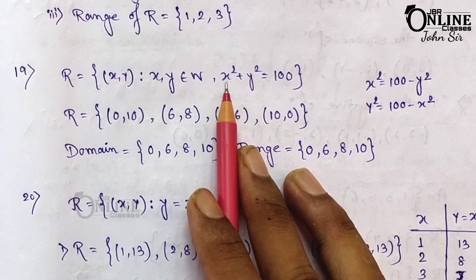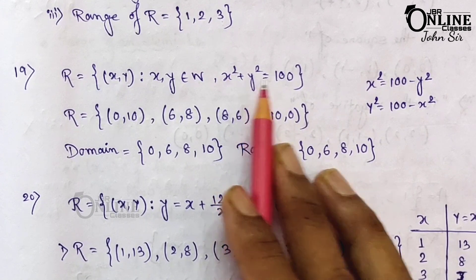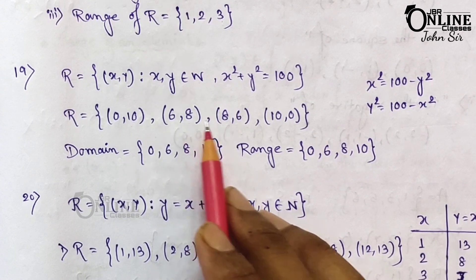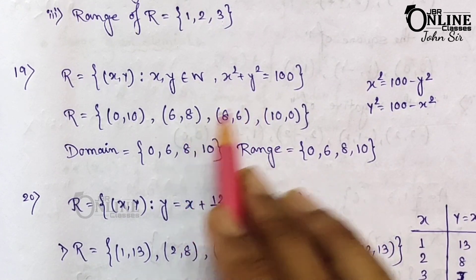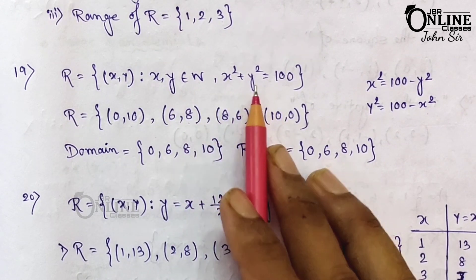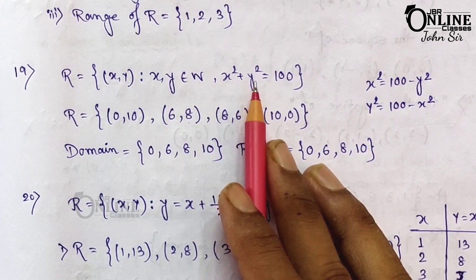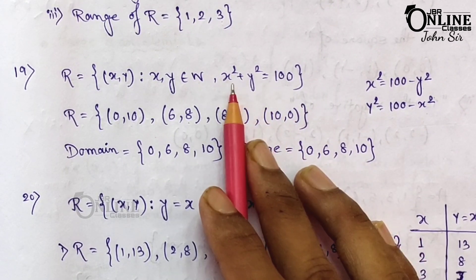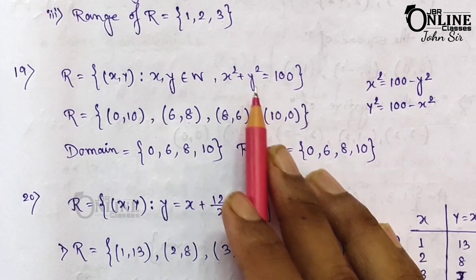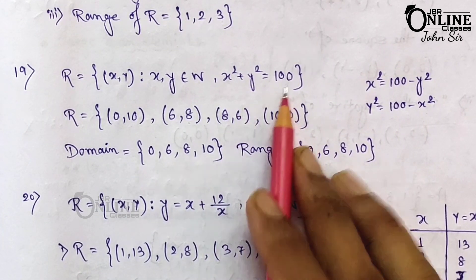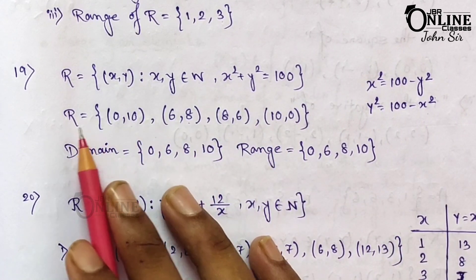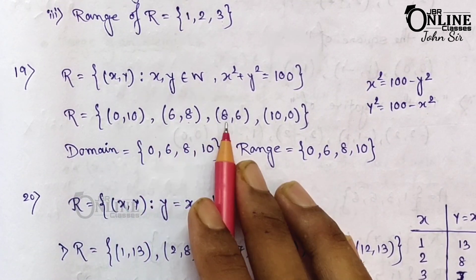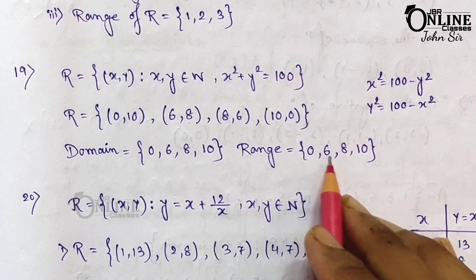If x = 6, then y² = 100 − 36 = 64, so y = 8, giving (6, 8). Also, if x = 8 and y = 6, then 64 + 36 = 100, giving (8, 6). If x = 10 and y = 0, that is also 100, giving (10, 0). So the domain is {0, 6, 8, 10} and the range is also {0, 6, 8, 10}.